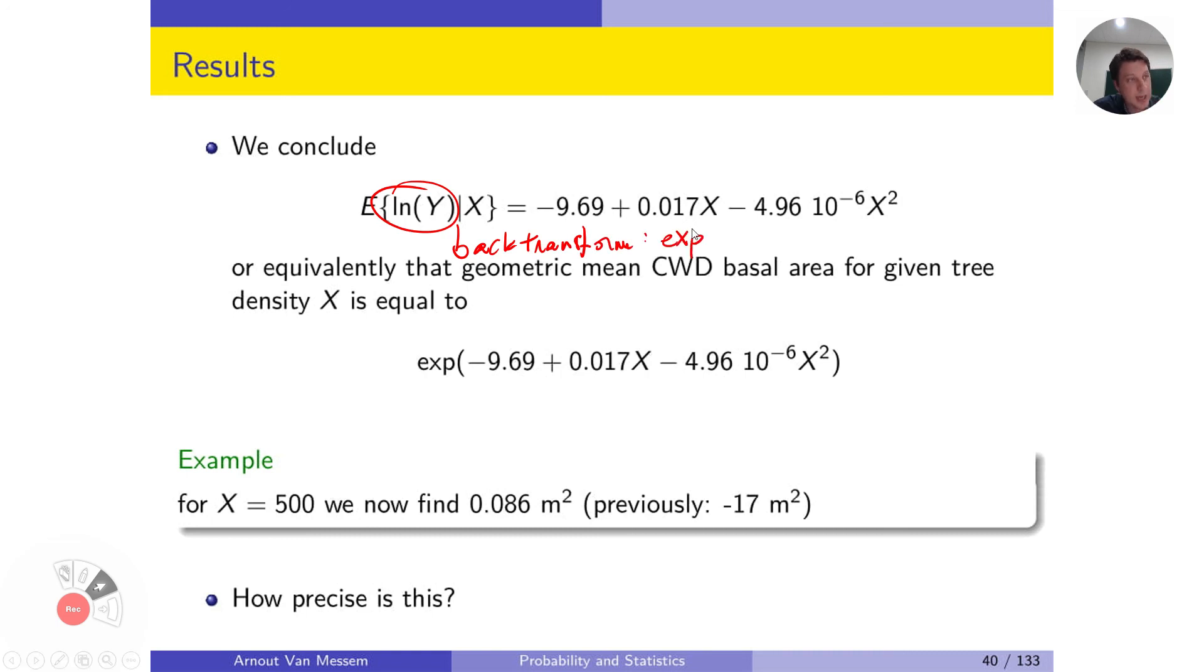So we take the exponential of the left side and of the right side, and so it means that the geometric mean of the basal area for a given tree density of x is equal to the exponent of the right-hand term, so the exponent of this expression.